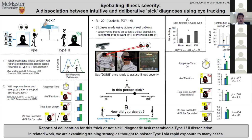In conclusion, these data support the idea that eyeballing illness severity follows a dual process logic. This is more of a descriptive project in nature, but we're also working on projects looking at whether we can augment this type one process by training clinicians with a lot of different cases — a kind of rapid exposure-type procedure. I'd like to thank all my collaborators for helping me with such an interesting project, and I'm eager to answer any questions.